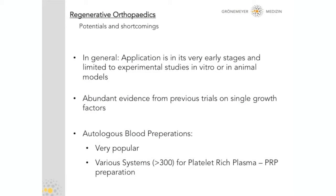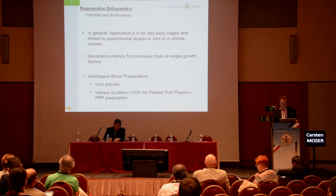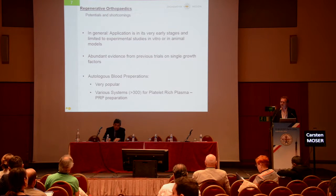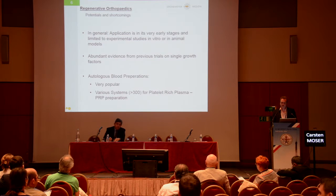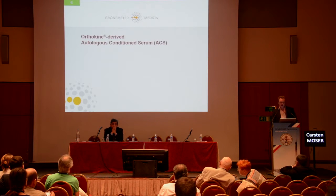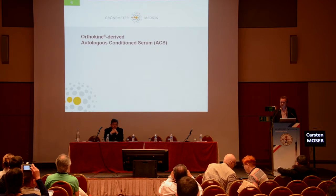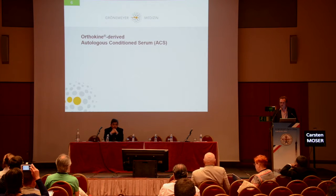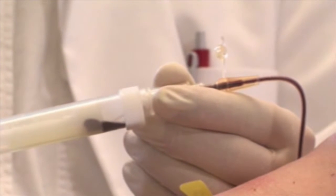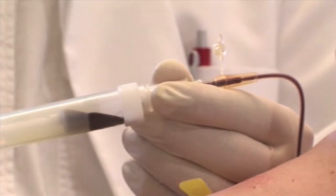Autologous blood preparations are becoming more and more popular worldwide, and nearly every scientific convention has a specialty day dealing with these factors. The biggest problem is that there are about 300 different systems to prepare platelet-rich plasma. One system that differs from a normal PRP system is the therapy called Autologous Conditioned Serum, the ACS therapy, marketed under the name Orthokine.